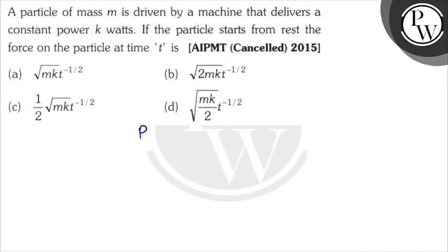The constant power is equal to constant. So constant is equal to m into dv by dt, acceleration into speed.